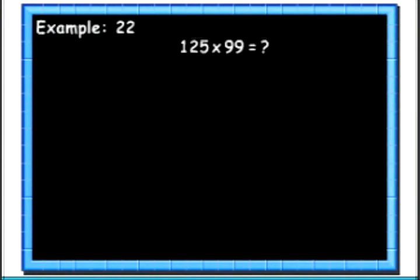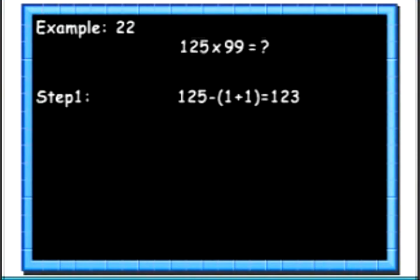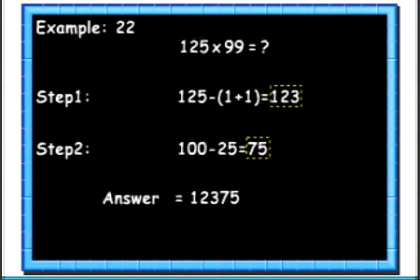Here we will learn how to multiply any number with 99 faster. Let's see an example. Here we will multiply 125 with 99. Step 1: subtract 2 (that is 1 added to the first digit) from 125. Step 2: find 100's complement of 25. Step 3: join both the values together to get the result. So we get the final answer as 12,375.